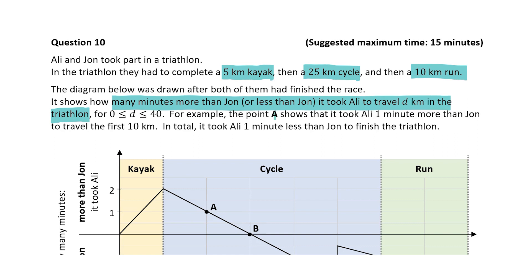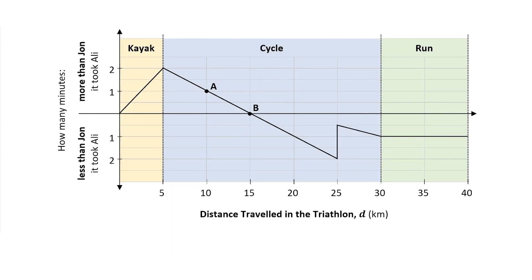As an example, point A shows that it took Ali one minute more than John to travel the first 10 kilometers, and in total it took Ali one minute less than John to finish the triathlon, so Ali beat John by one minute. Looking at the graph, after the kayak section at five kilometers, it took Ali two minutes more than John. After the cycle at 30 kilometers, it took Ali one minute less than John, and for the whole 40 kilometers it took Ali one minute less than John to complete the triathlon.